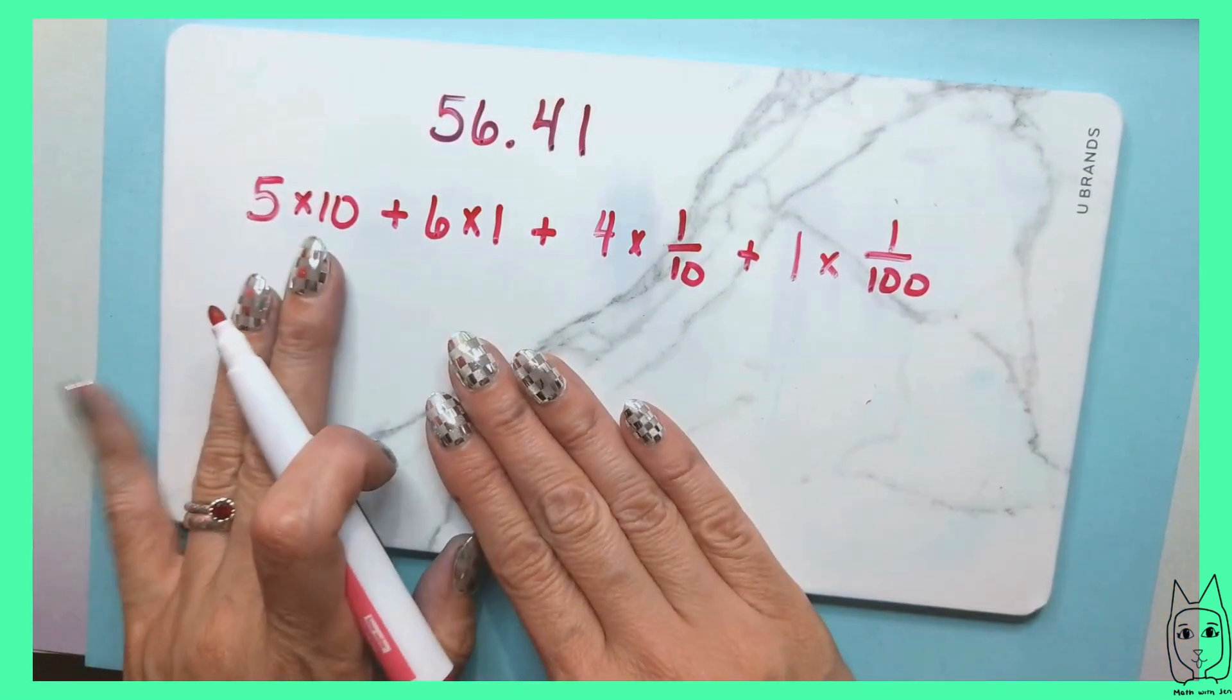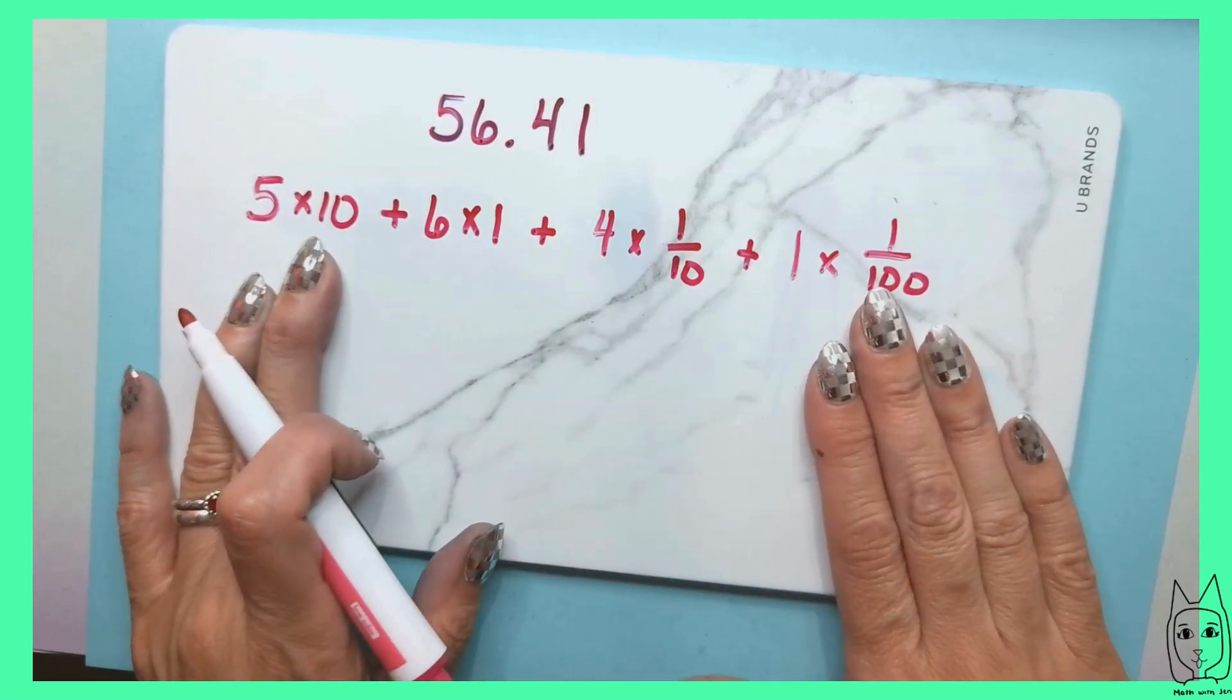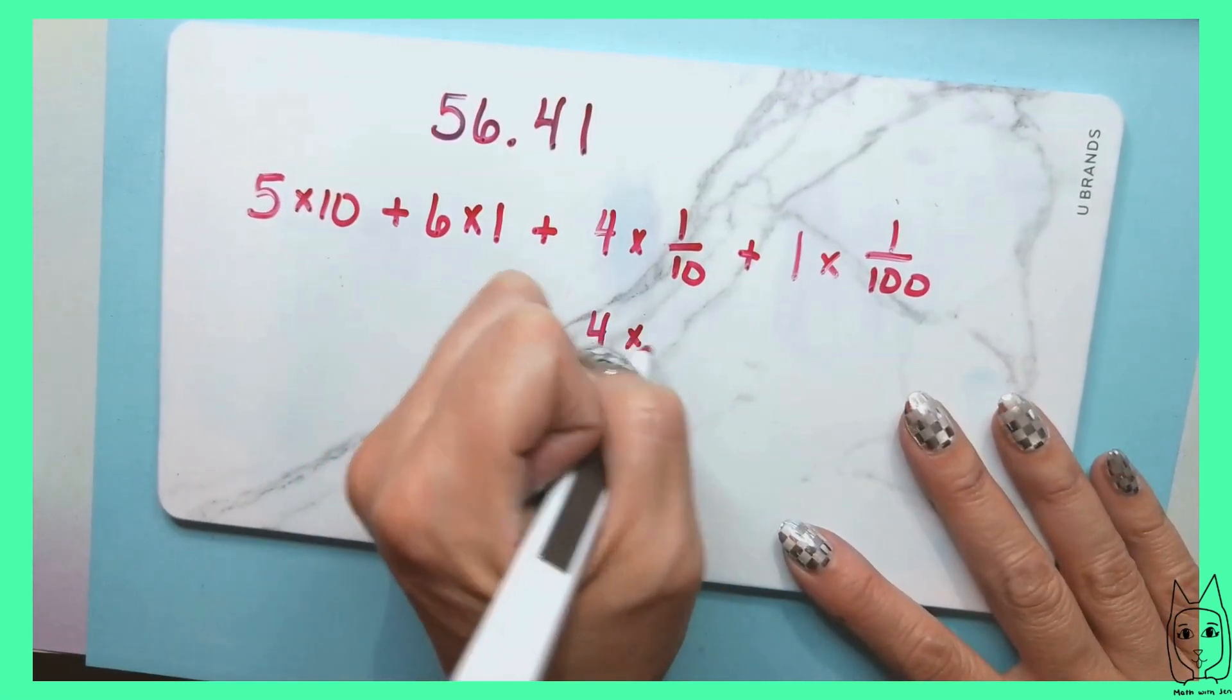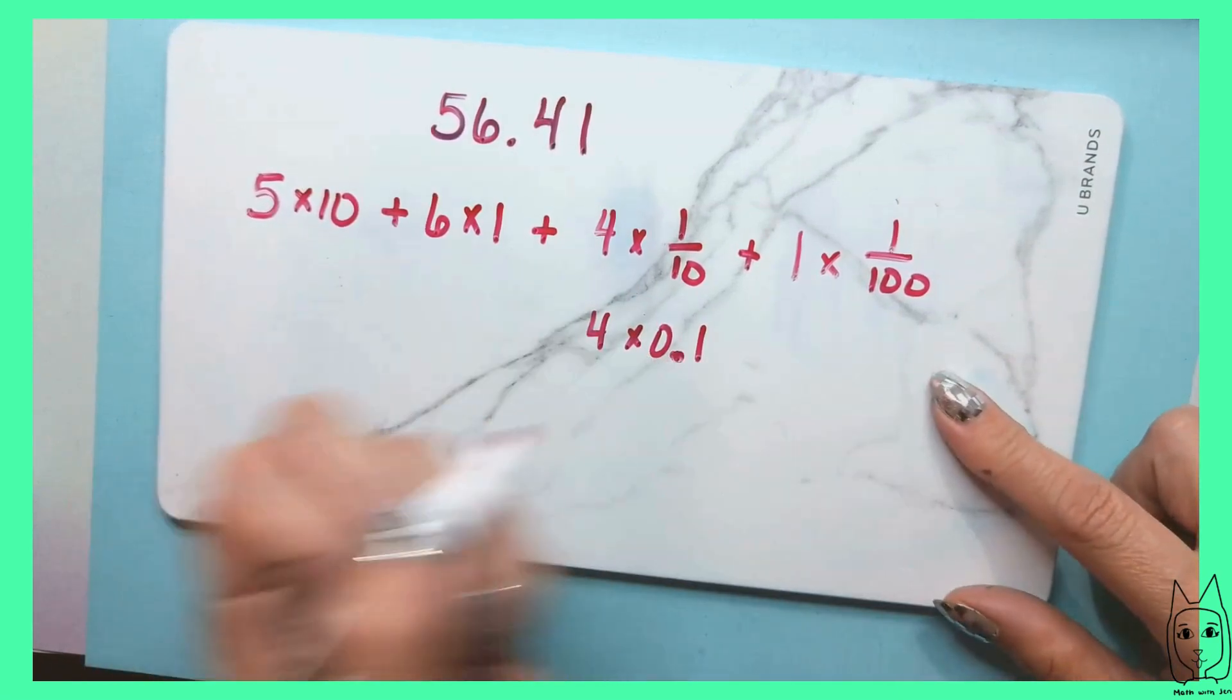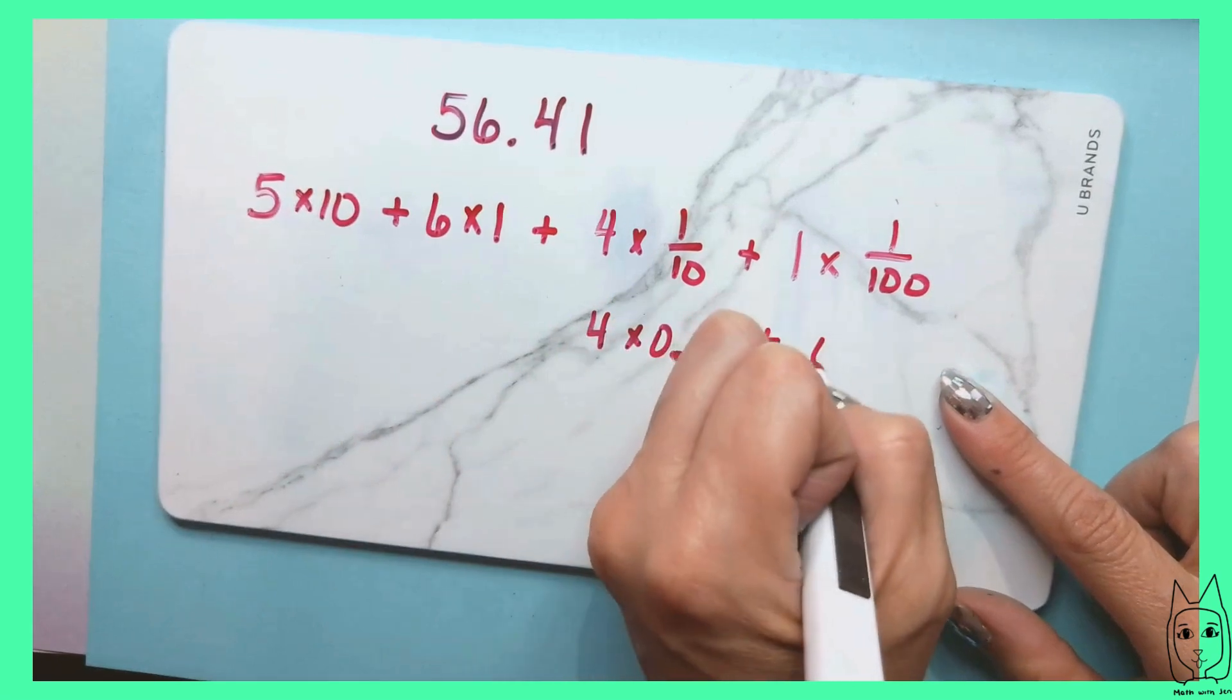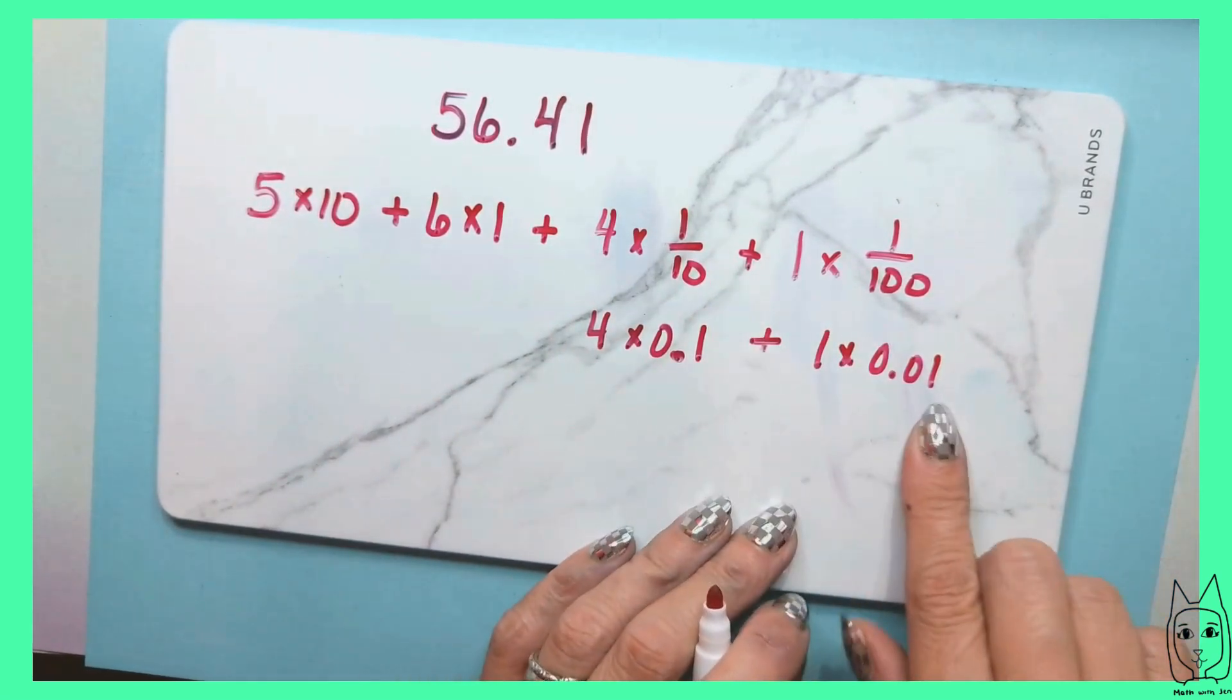So expanded notation is taking each of those place values and showing what they represent. 4 times 0.1. This is another way to write one tenth, and then you could also write this one as 1 times 0.01, which is one hundredth.